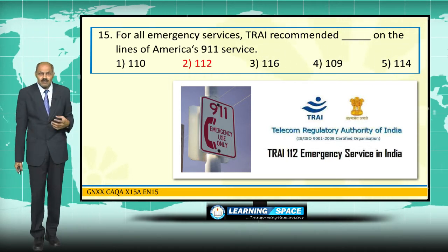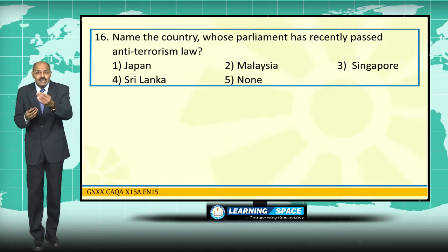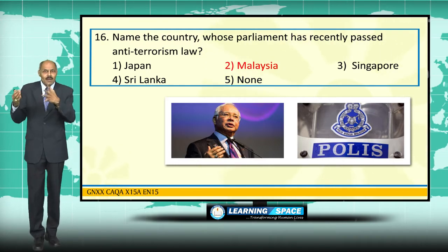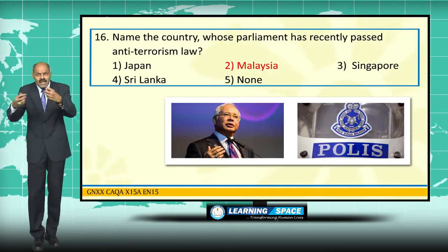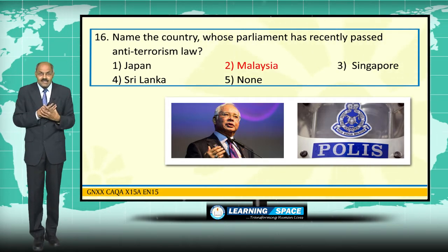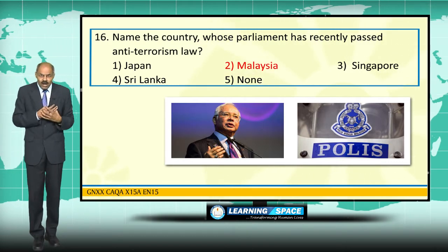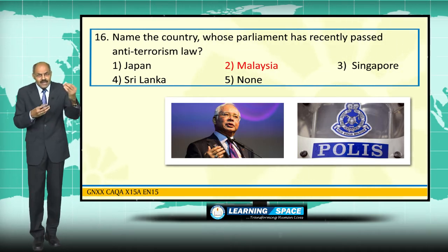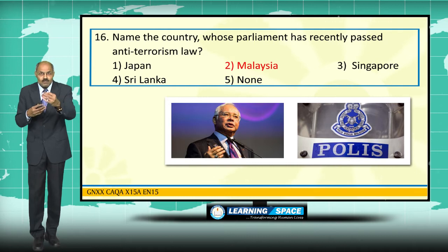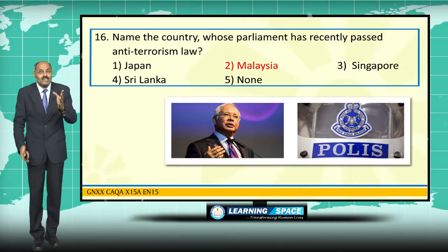Malaysia is the country whose parliament recently passed an anti-terrorism law. There is apprehension from several quarters that it will take away the common man's freedom of expression and liberty. Experience across the world shows that wherever this type of anti-terrorism law is enforced, it normally affects freedom of speech and expression.